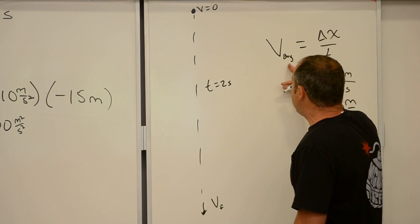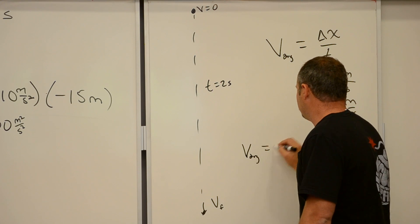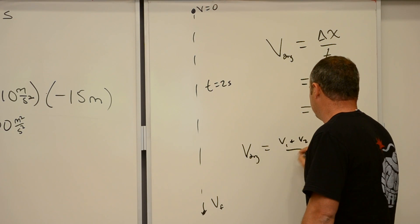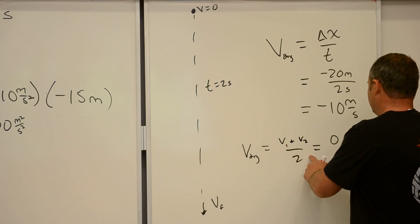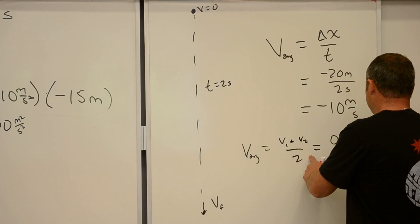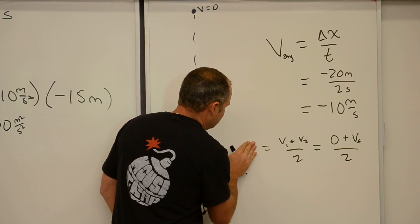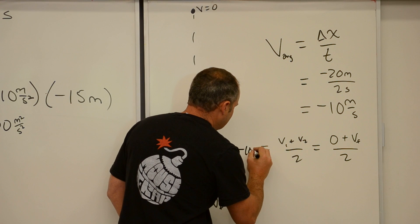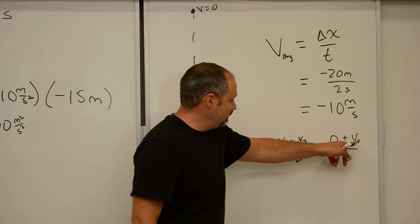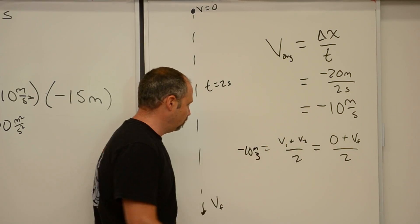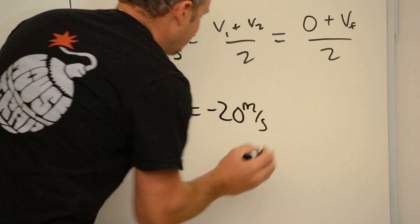If that's the average and it starts at zero, I know the average equals V1 plus V2 divided by two. V1 is zero, so: negative 10 equals V_final divided by two, which means V_final has to be negative 20. Negative 20 divided by two is negative 10. So that's another way to find the final velocity.